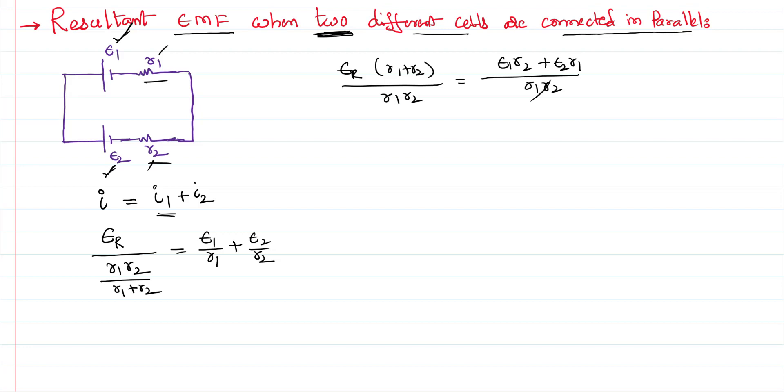Plus e2 r1, so these can be cancelled. So e resultant is e1 r2 plus e2 r1 divided by r1 plus r2. What happens if the two cells are identical?